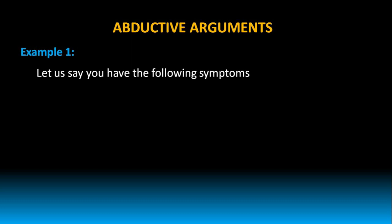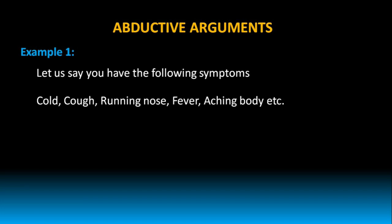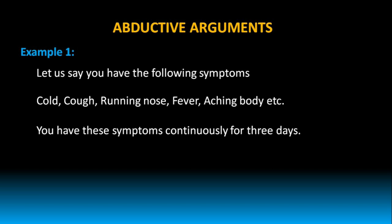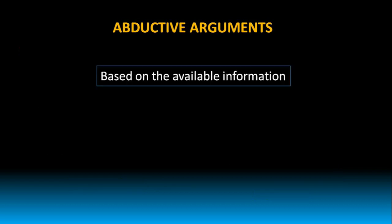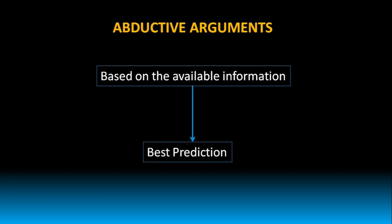Let's say you have the following symptoms: cold, cough, running nose, fever, aching body, etc. You have these symptoms continuously for 3 days. So what can you conclude with this available information? You may conclude that you are having some kind of flu. But how did you arrive at this conclusion? You have just taken into account the available information at hand and then gave the best prediction. That's why abductive arguments always take into account the available information and then give the best prediction.